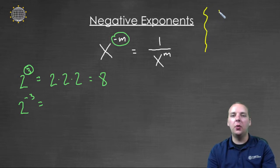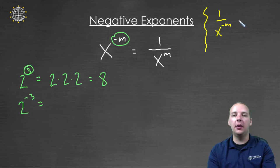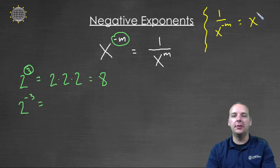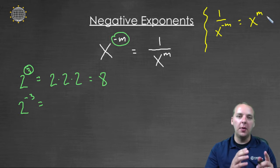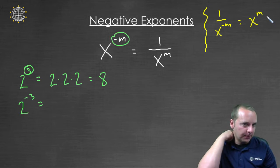If you had one over something to a negative exponent, but the negative exponent was already in the denominator, then you would move it up to the numerator with a positive exponent. So no matter where it is, if it has a negative exponent, it'll either move from the numerator to the denominator and have a positive exponent, or vice versa, from the denominator to the numerator and have a positive exponent.